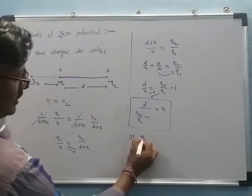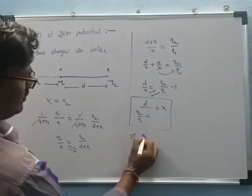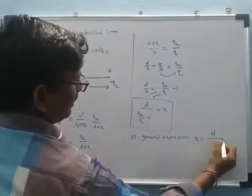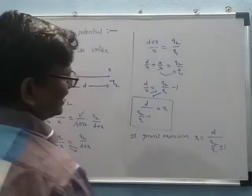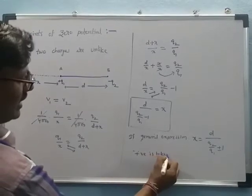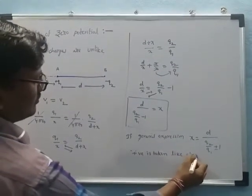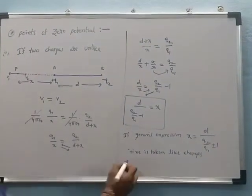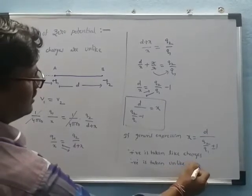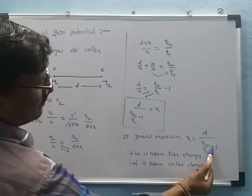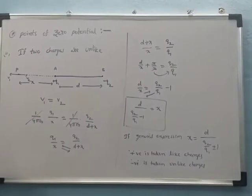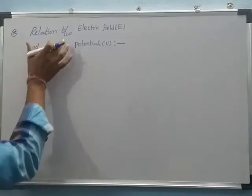The general expression is X = D / (Q2/Q1 ± 1). The plus sign is taken for like charges and the minus sign is taken for unlike charges. These are the two special cases for points of zero potential. Next, we discuss the relation between electric field and electric potential.